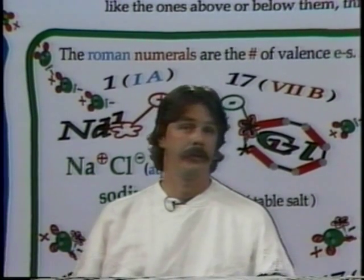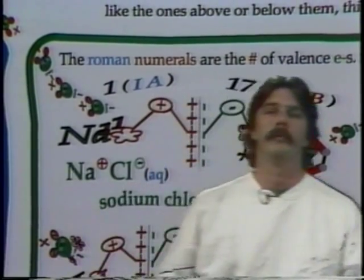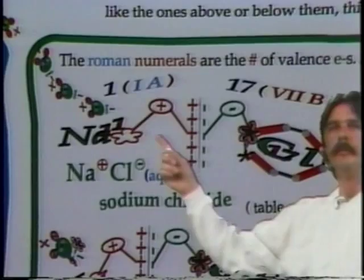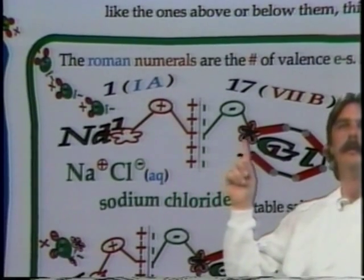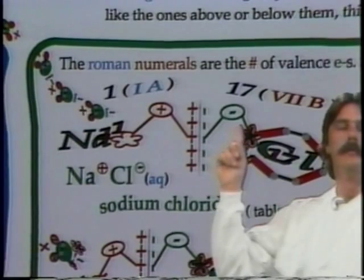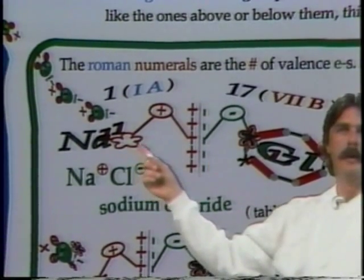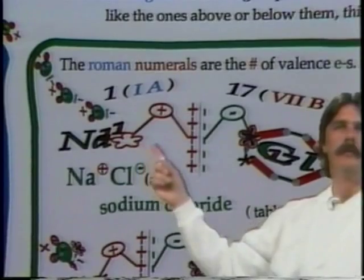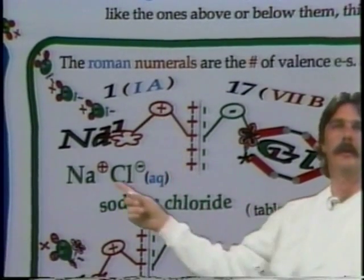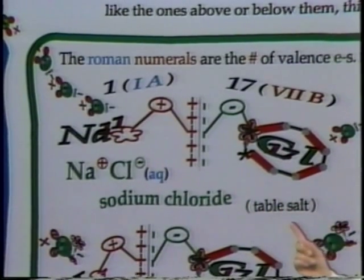For ionic bonding, take sodium and chlorine. Sodium will actually give up its electron to chlorine. By chlorine getting its eighth electron, it gets a negative charge overall. Sodium, on the other hand, lost its electron, so what's left behind is a positive charge. This makes sodium chloride — table salt.